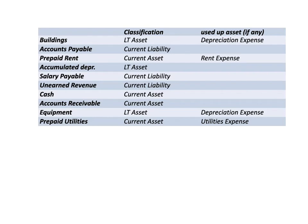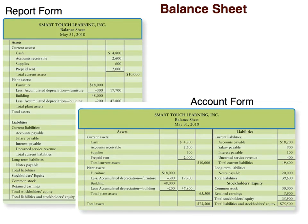Let's talk about the balance sheet a little bit more and the two forms you might see: the report form and the account form. The report form is the one you'll see most often — it looks like a report and goes straight down the page: assets, liabilities, owner's equity or stockholders' equity. The account form looks like the accounting equation, because we have assets on the left and liabilities and owner's equity on the right. That might help you remember the account form as looking more like the accounting equation.